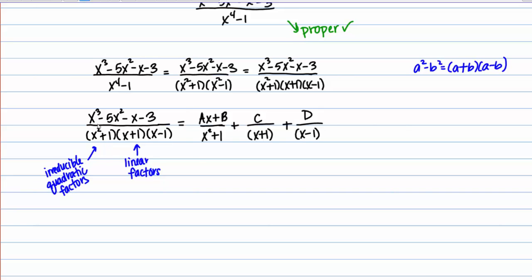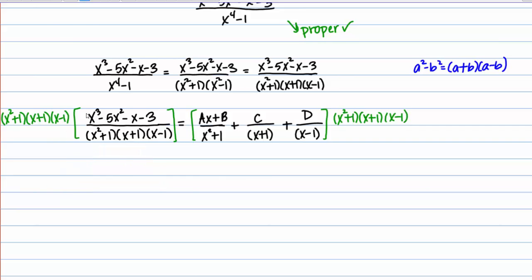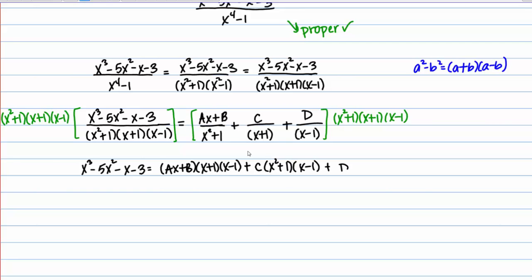To begin solving for the constants, I need to multiply both sides of this expression by the common denominator, which is x squared plus 1 times x plus 1 times x minus 1. The purpose of this is to get rid of all the denominators. On the left-hand side I'm left with x cubed minus 5x squared minus x minus 3. On the right-hand side, distributing and reducing, I get: ax plus b times x plus 1 times x minus 1, plus c times x squared plus 1 times x minus 1, plus d times x squared plus 1 times x plus 1.